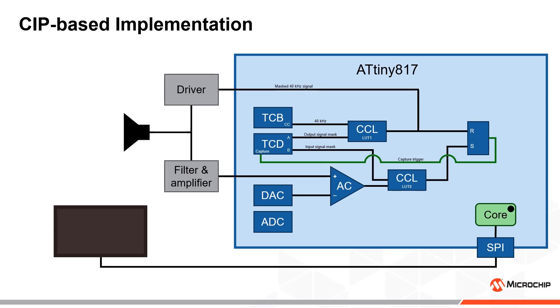We start with only the 40 kHz signal. When the output signal mask is enabled, the transducer starts transmitting the ultrasonic pulse train. At the same time, the RS latch is reset, which causes the TCA peripheral to start counting.